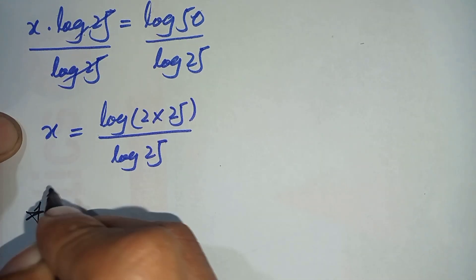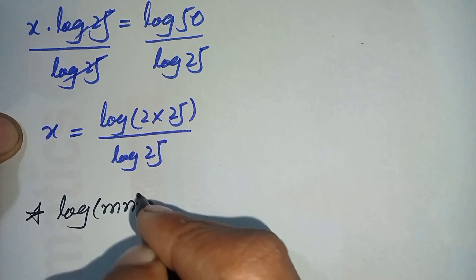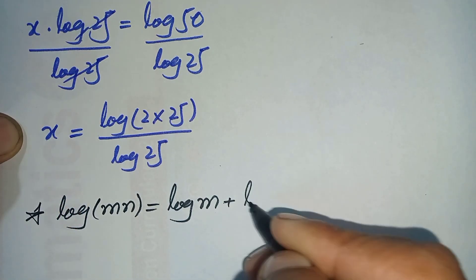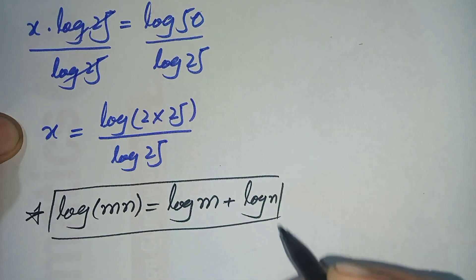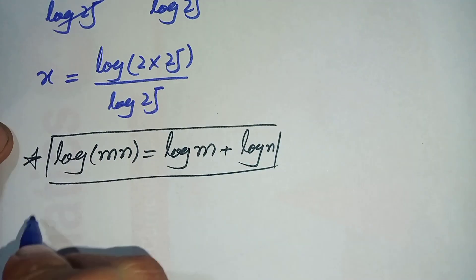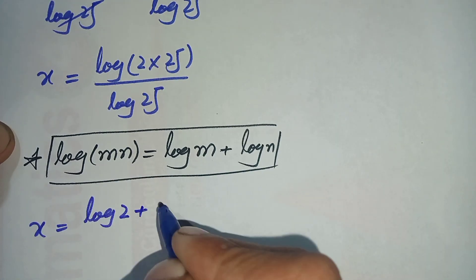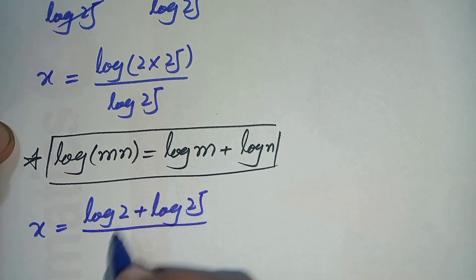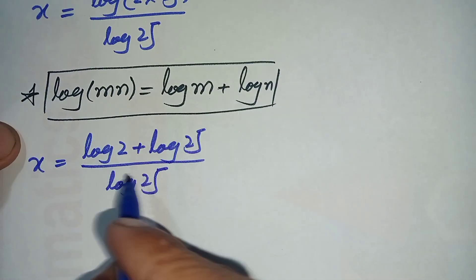In the numerator, log of 2 times 25, we will use the logarithm rule that log of m times n can also be written as log of m plus log of n. Using this property, the numerator becomes log of 2 plus log of 25, all divided by log of 25.